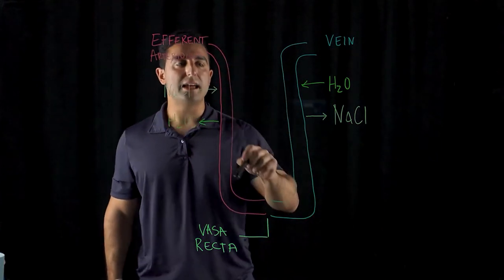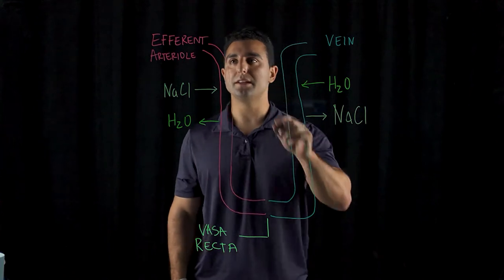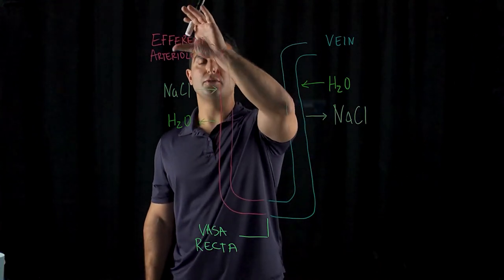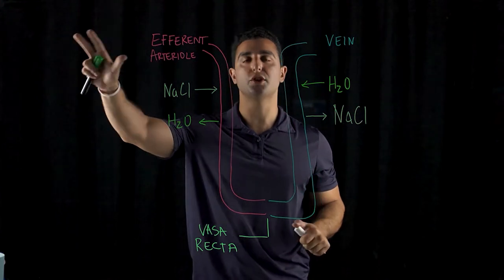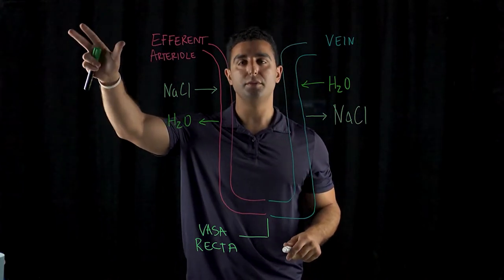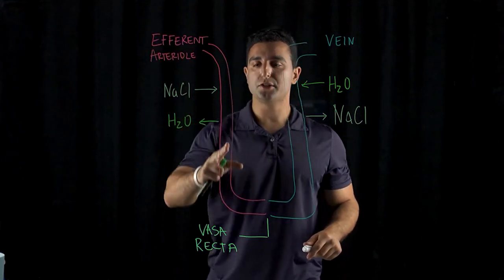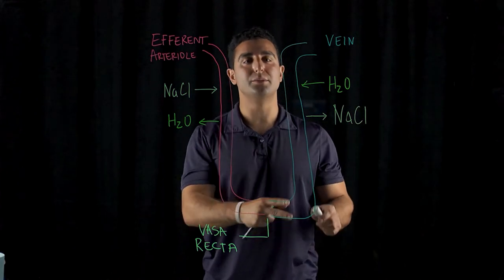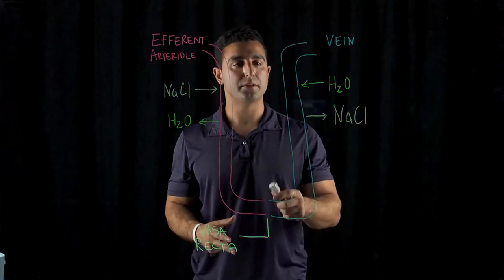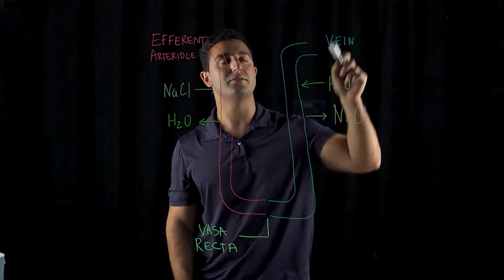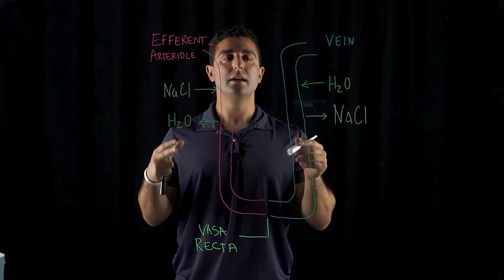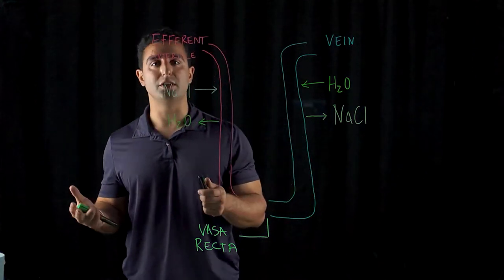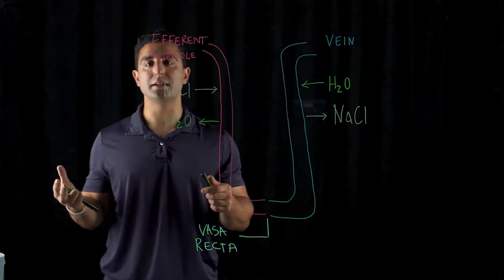So vasa recta is a blood capillary. And so if you notice here from before, afferent arterioles come from which structure? From the glomerulus. Come in, surround, or they're very proximal to the loop of Henle, and they exit everything from the vein. So what's really important about the vasa recta, it is very proximal to the loop of Henle. What was loop of Henle responsible for in terms of osmotic gradients?